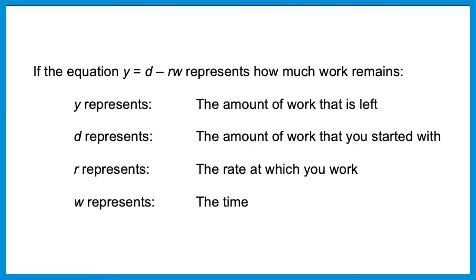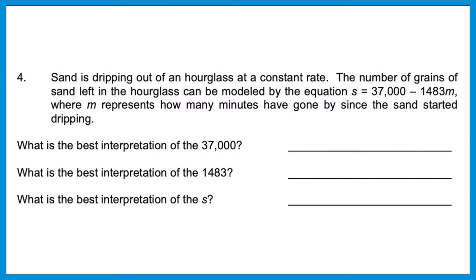If the equation y equals d minus rw represents how much work remains: y is the amount of work left, d is the amount of work you started with, r is the rate at which you work, and w is the time. Let's look at a cousin of this variation: sand is dripping out of an hourglass at a constant rate. The number of grains of sand left can be modeled by the equation s equals 37,000 minus 1,483m, where m represents how many minutes have gone by. What's the best interpretation of each number?